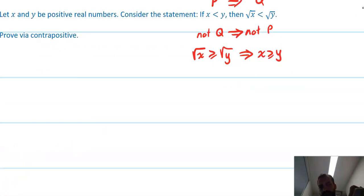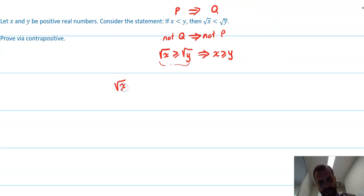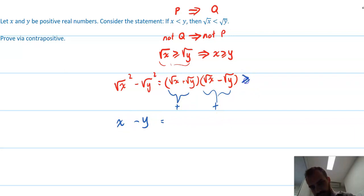X and Y are positive real numbers. This is actually just a variation of a proof we did in direct proofs. We can start with root X and square that, and start with root Y and square that. Now that's the difference of two squares: root X plus root Y times root X minus root Y. We should be able to say that bit is positive, and given that root X is greater than root Y, this bit's positive as well. Root X squared is just X and root Y squared is just Y, so X minus Y is positive times positive, which is greater than or equal to zero.